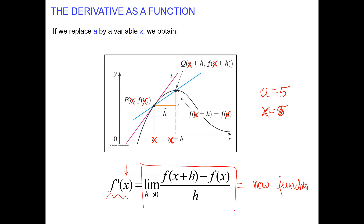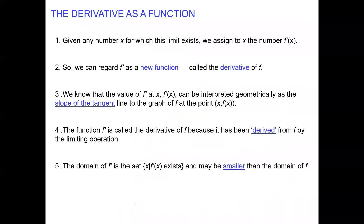Everything stays the same. The whole procedure of evaluating this limit, we will keep it. Given any number x for which this limit exists, we assign to x the number f prime of x. We create a new function, called the derivative. Geometrically, it's still the slope of the tangent line.